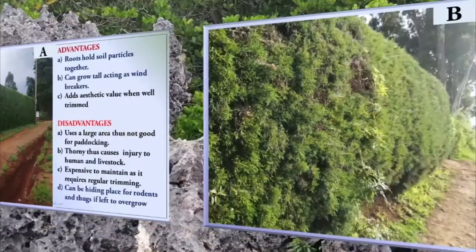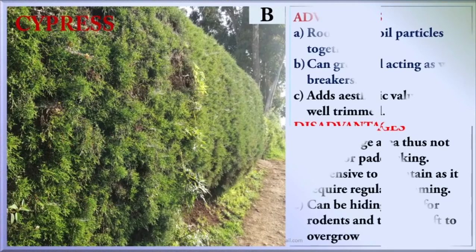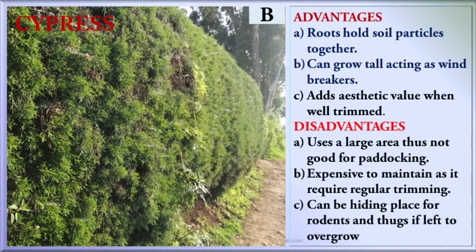The next fence, which is not very common, is Cypress. Its advantages: the roots hold soil particles together, and it can grow tall, acting as windbreakers. Its disadvantages: it uses a large area that is not good for paddocking; it is expensive to maintain as it requires regular trimming; and it can be a hiding place for rodents and thugs if left to overgrow.